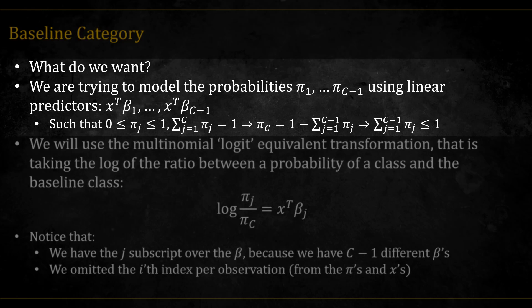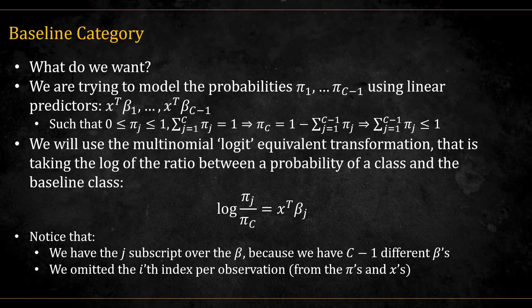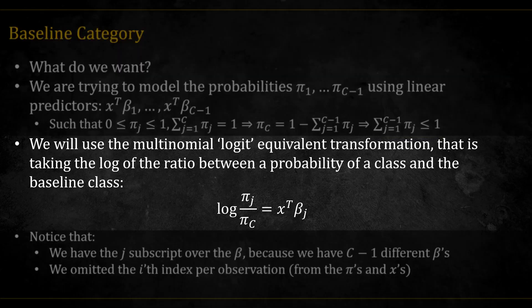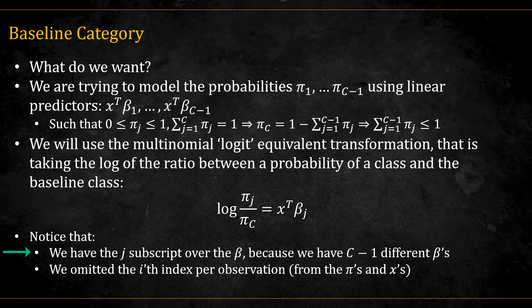What do we actually want in this model? We are trying to model C-1 probabilities using C-1 different linear predictors, x times beta_1 up to x times beta_{C-1}. Notice that there are C-1 different betas. The condition is that each probability will be between 0 and 1, and that the sum of the C-1 probabilities will be less than or equal to 1. The way to achieve this is by using a logit variant, where we take the log of the ratio of each probability to the baseline probability. So log(pi_j / pi_c) is equal to the j-th linear predictor. Doing so ensures we get what we want and that the restrictions are met. Note that we have the j-th subscript over the betas, because we have C-1 different betas — so a lot of coefficients.